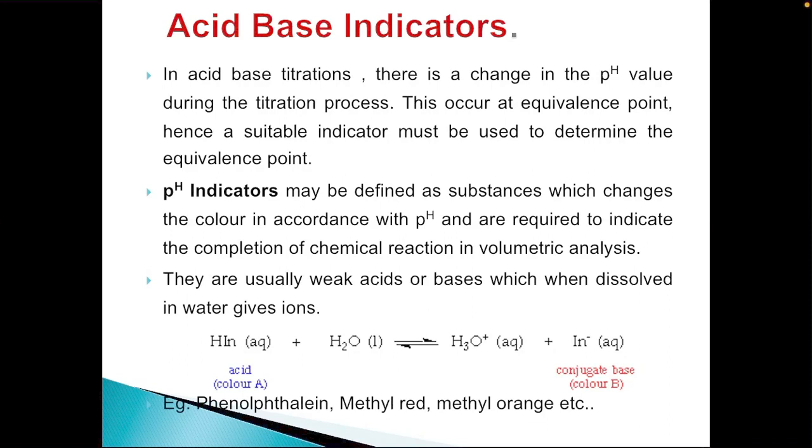These acid base indicators can also be called pH indicators because the color changes depend upon the change in pH. pH indicators can be defined as substances which change the color in accordance with pH and are required to indicate the completion of the chemical reaction in volumetric analysis.